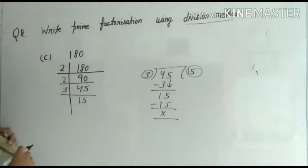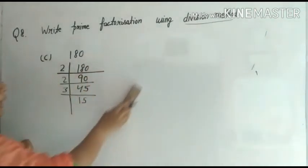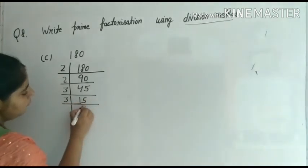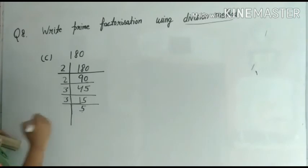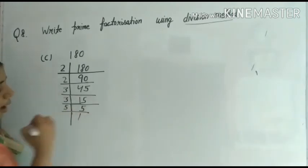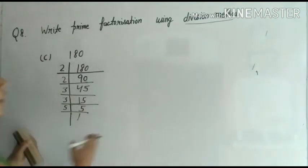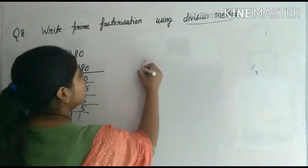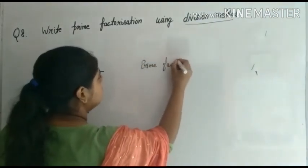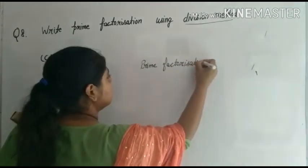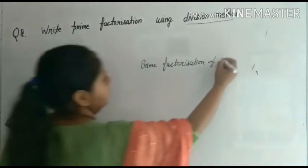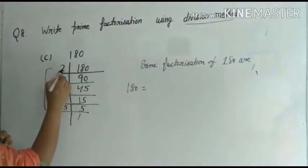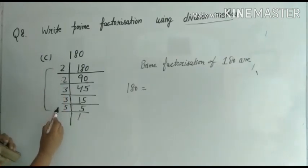Now fifteen — divide it by three. Three comes in the table of three — three fives are fifteen. Then five — divide five by five. Five ones are five. So prime factorization of one hundred eighty is complete. Using which method? Division method. Prime factorization of 180 equals 2 × 2 × 3 × 3 × 5.